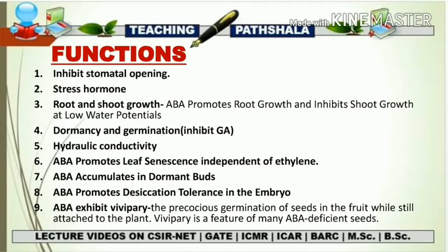Under dehydrating conditions or low water potential, root growth is much higher in the wild type as compared to ABA-deficient mutants. In the wild type, less water is available for the shoot, so there is higher overall development of the root. That is why ABA promotes root growth and inhibits shoot growth whenever there is low water potential, resulting in a dramatic increase in the root-to-shoot ratio.